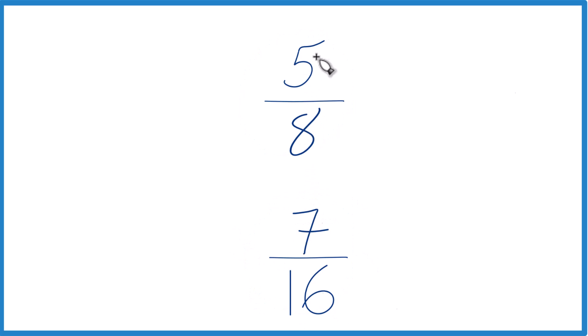First, you could just divide 5 by 8 on your calculator, get a decimal, then 7 by 16, get a decimal and compare them. You find that 5 eighths, that is the larger fraction. You'd have a larger decimal for 5 eighths.